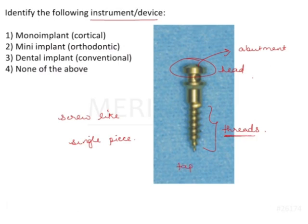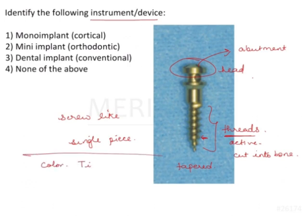These threads are very peculiar — it's a tapered kind of screw and these threads are active, meaning they are very sharp and will cut into the bone. Also, looking at the color, it doesn't look like it is made up of titanium. It has a yellowish hue and is not looking like a titanium implant.